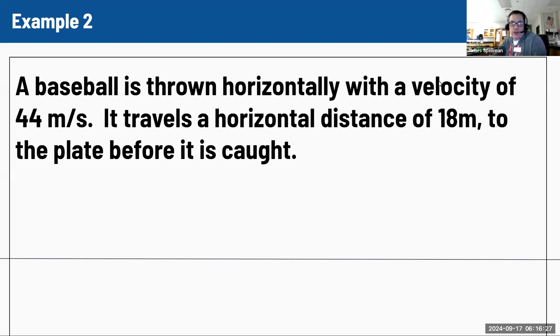So this example that you've got, we've got a baseball thrown horizontally with a velocity of 44 meters per second. It travels a horizontal distance of 18 meters to the plate before it's caught. It helps to sketch these things out because we want to make sure we keep our side to side motion and our up and down motion separately. So it tells us the ball is going 44 meters per second in the X direction, and it tells us how far it goes, which is 18 meters in the X direction.